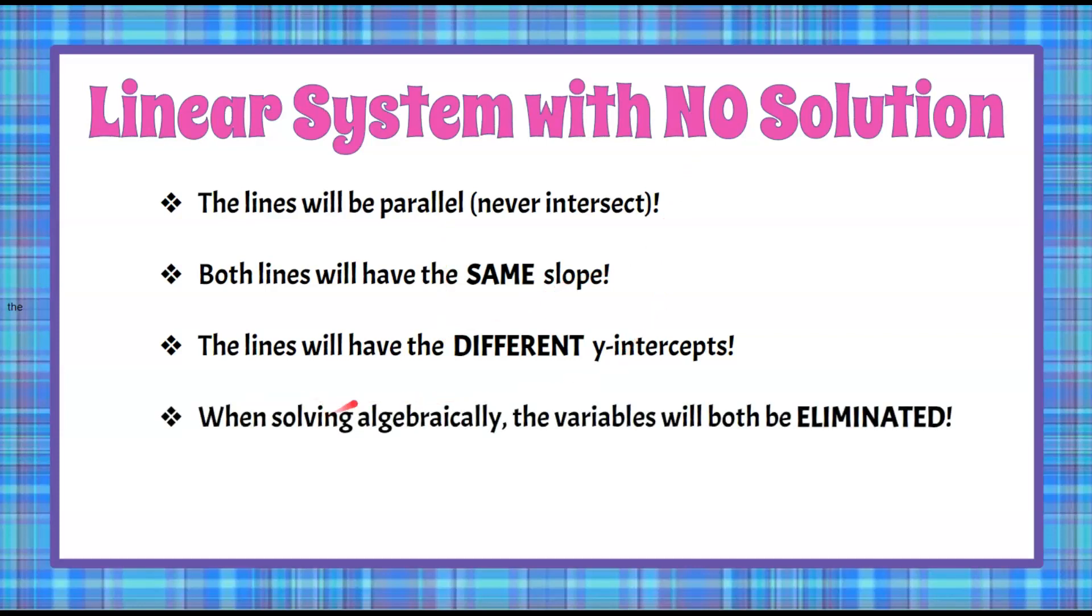When we solve algebraically, the variables will both be eliminated, meaning you won't have an x or a y. You'll have two numerical values. And when we solve algebraically, those numerical values, that numerical sentence that's left, will be false, meaning you'll have 0 equals 2, which is not true, or something of that nature.